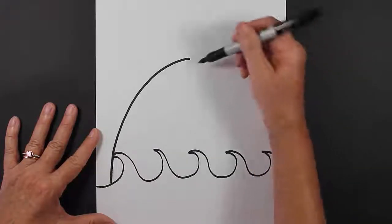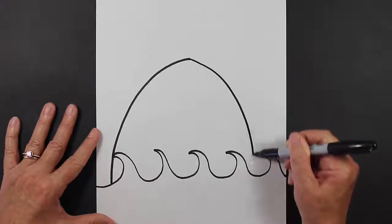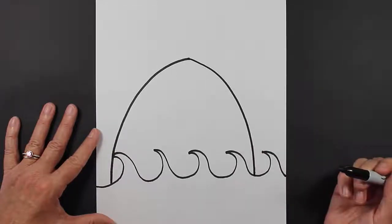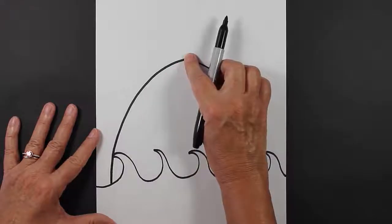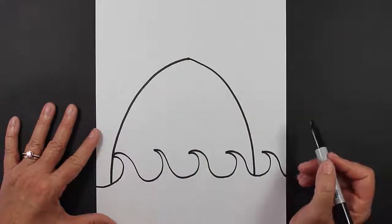That's going to be the nose of my shark, and then I'm going to come down like this right into the wave. So this is the nose of my shark, and right here is going to be the mouth, and it's going to be a big, wide, open mouth.